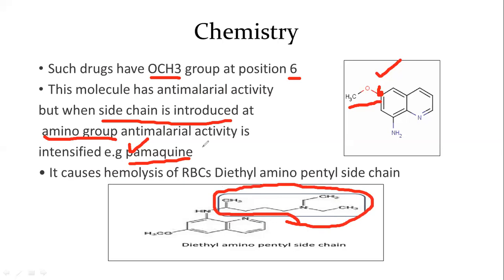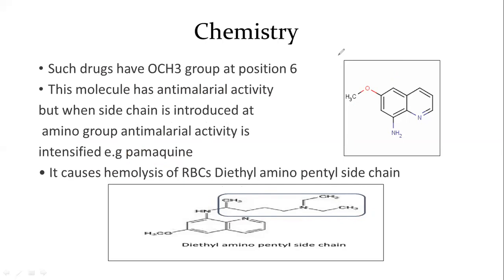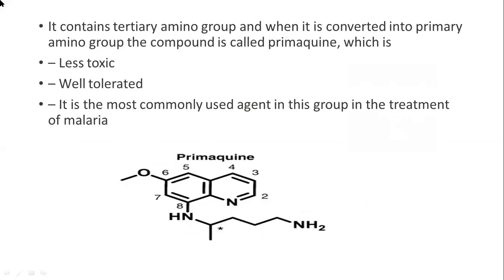Pamaquine causes hemolysis of RBCs. It contains a tertiary amino group. When it is converted into a primary amino group — if you look at the previous structure and compare — that gives us a different compound. The change being made is converting the tertiary amino group into a primary amino group.